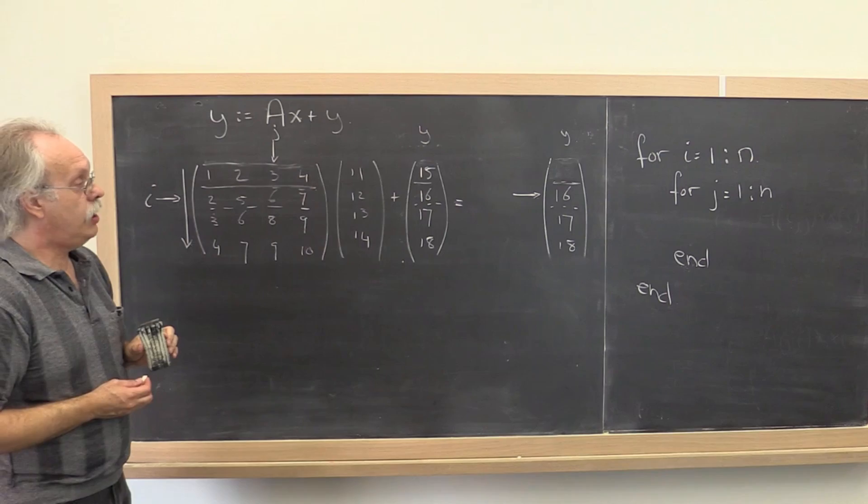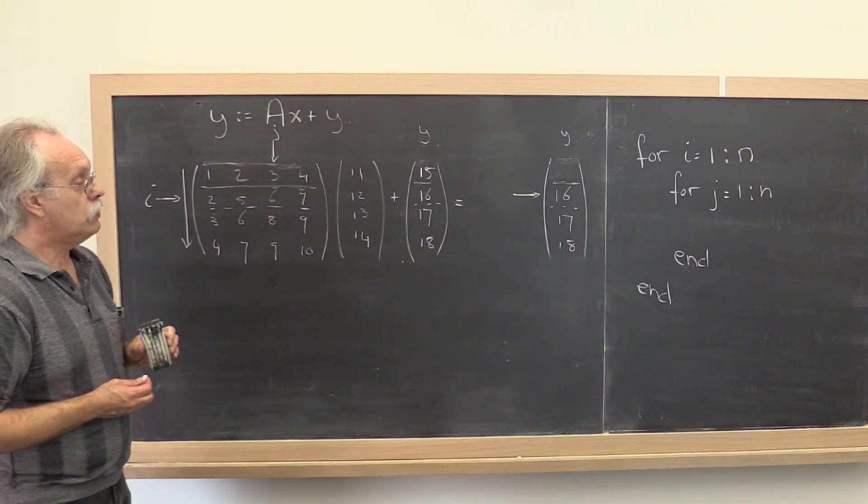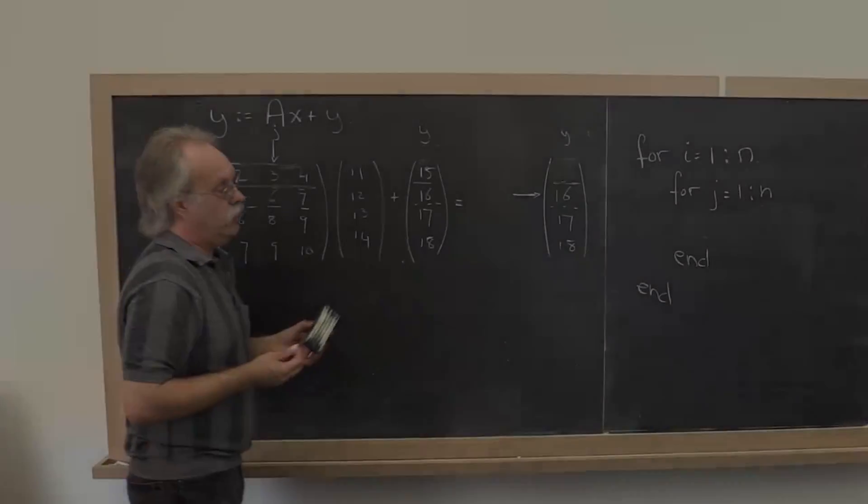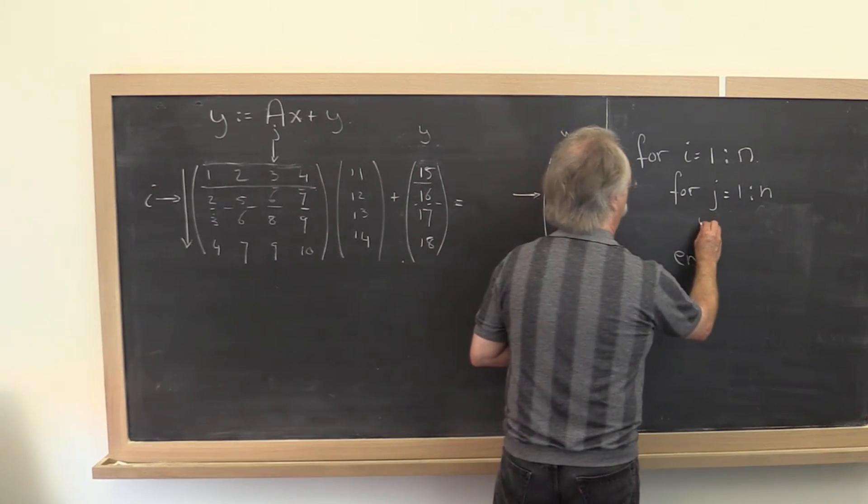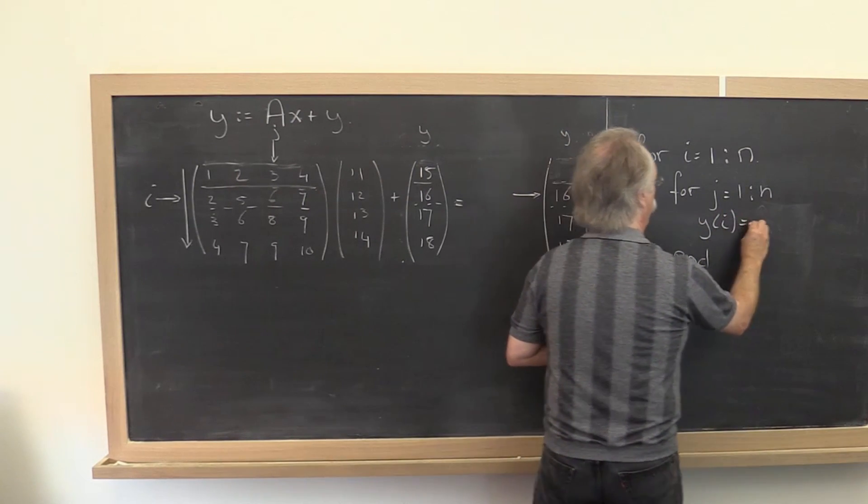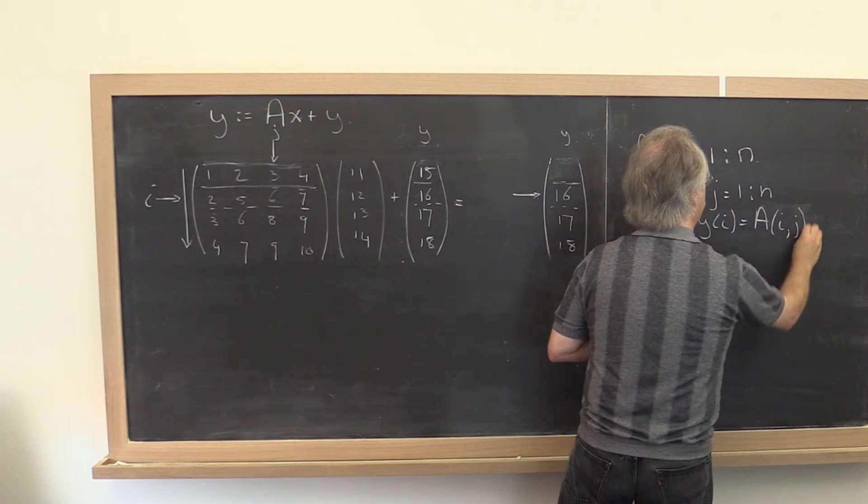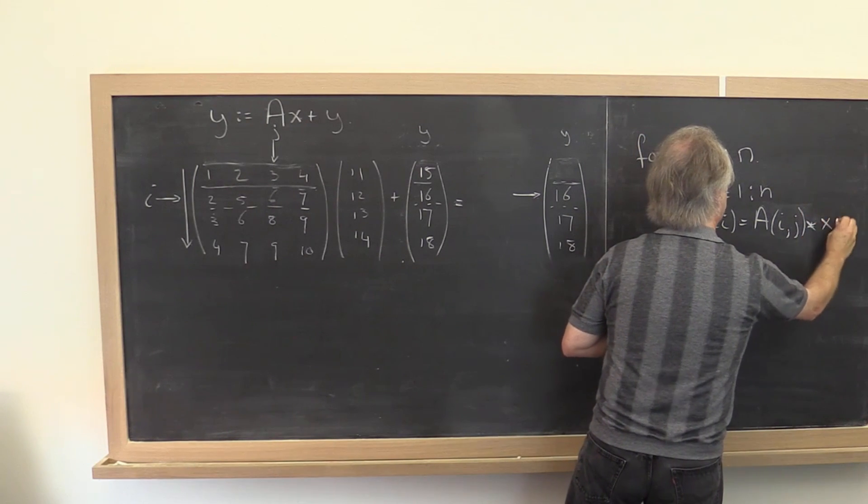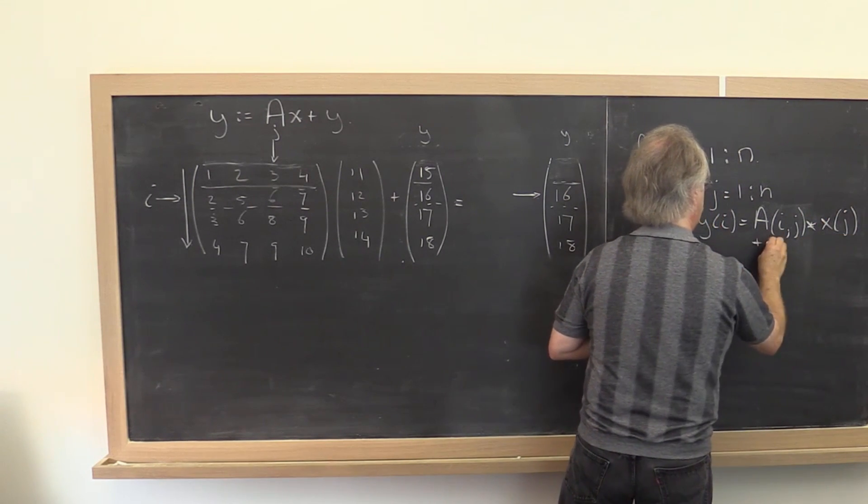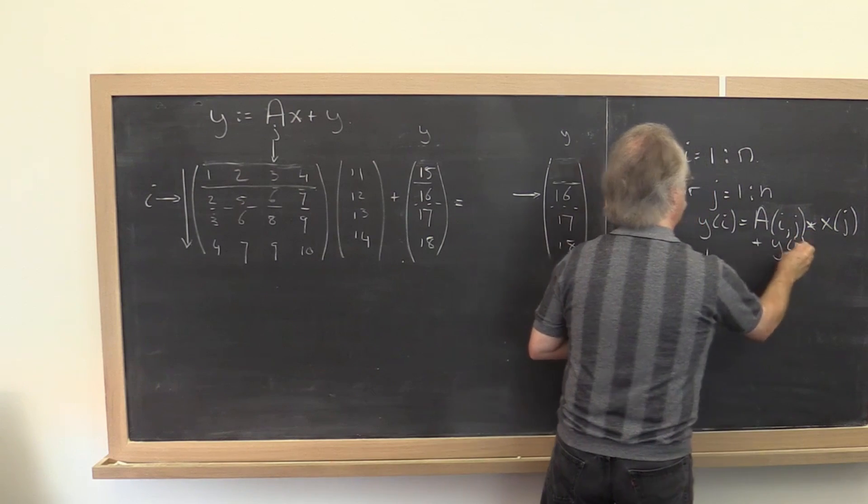And what would be the update to y that would come in the middle? Well, you're just updating y of i with a of i, j times a of i, j.